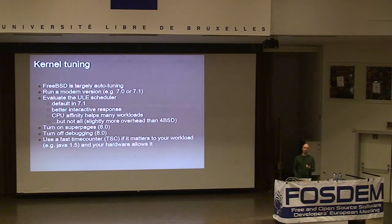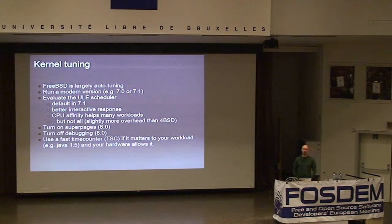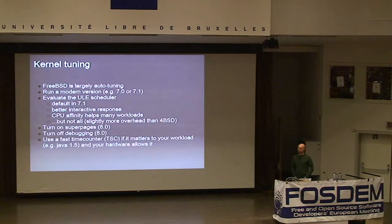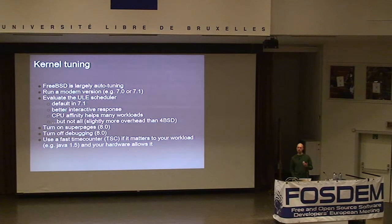FreeBSD 8 has a feature called Super Pages, equivalent to Linux's huge TLB pages, using larger TLB entries. The difference in FreeBSD is it's entirely automatic — you don't have to do any manual configuration or application changes. The kernel automatically promotes 4K pages to larger pages on demand and handles fragmentation. This is on by default and can give a 10–20% performance increase, especially for memory-intensive workloads like Java. If you're running a development version like FreeBSD 8, debugging is enabled by default which hurts performance, so make sure to turn that off. Also note that some applications like Java 1.5 do an insane number of gettimeofday syscalls, so using a fast time counter matters for those.